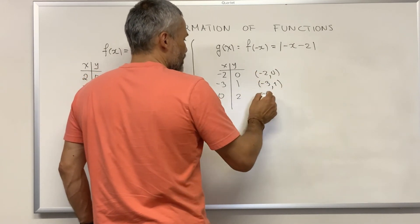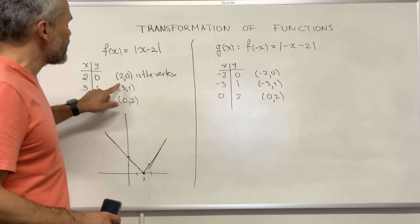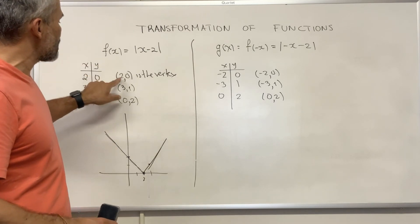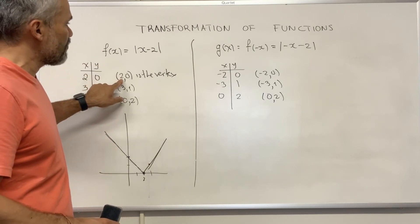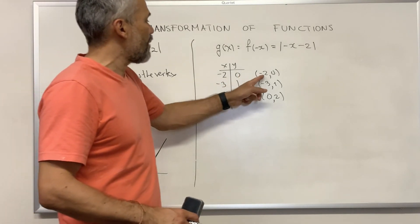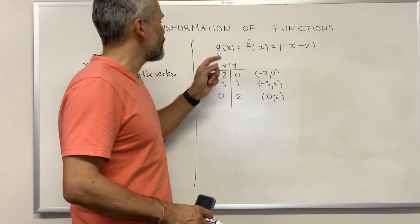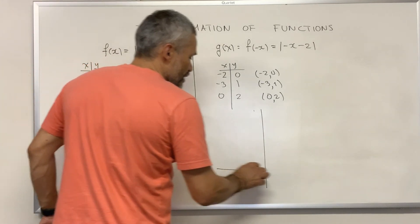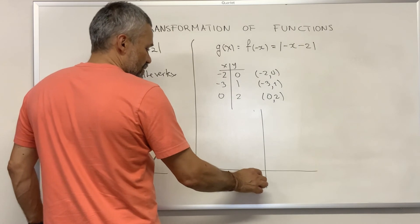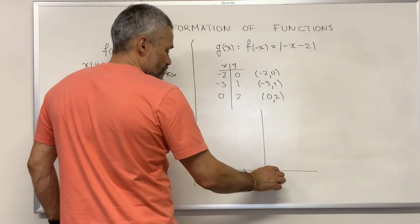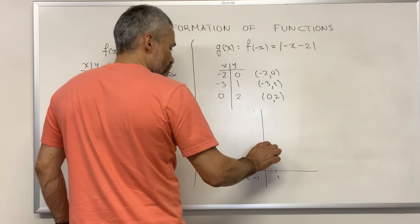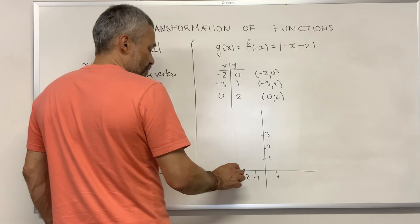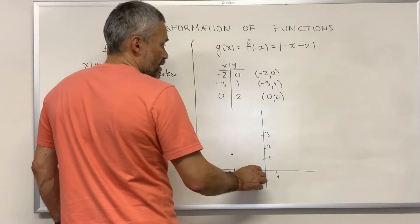We get the points (-2, 0), (-3, 1), and (0, 2). The observation is that if we have a pair on the graph of f, then when we change the first entry by multiplying it by negative 1, we get a corresponding pair on the graph of g. The new graph looks like this: we have (-2, 0), (-3, 1), and (0, 2).